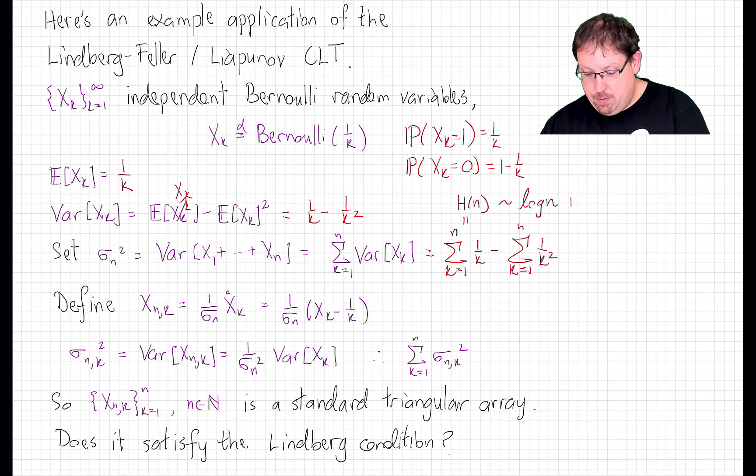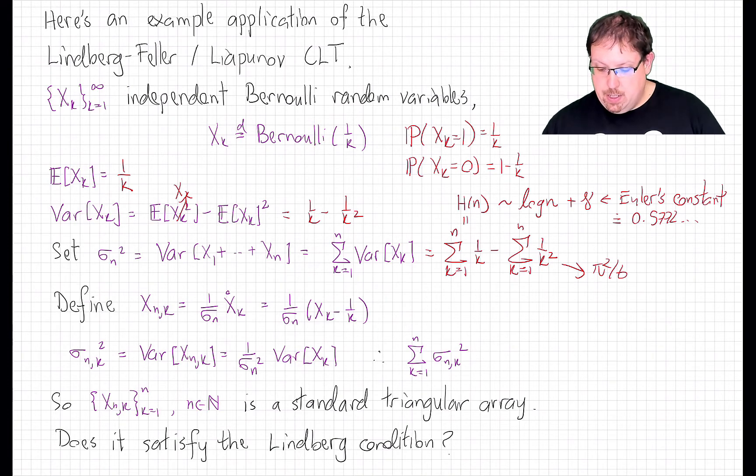In fact, the difference between them converges to a constant, Euler's constant, which is a little more than a half. So the variance of the sum of the first n is about log n.